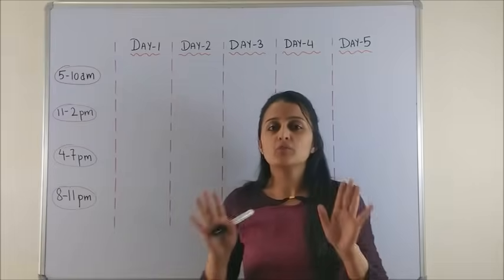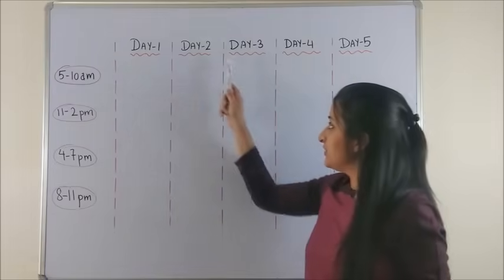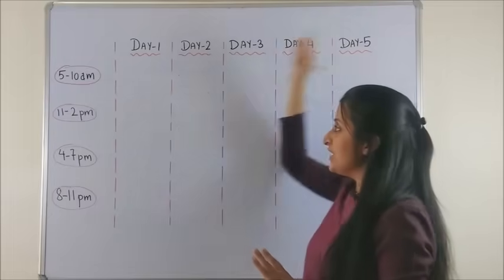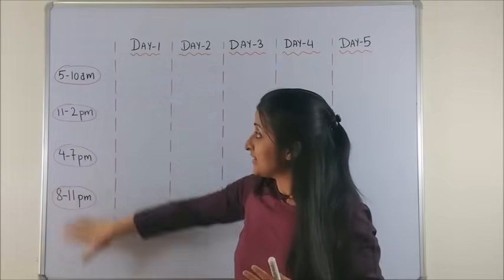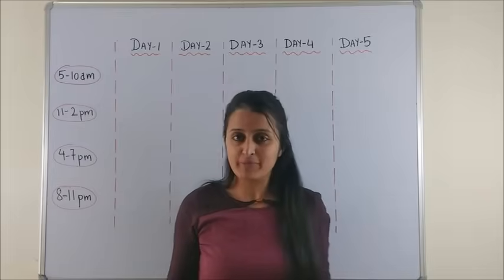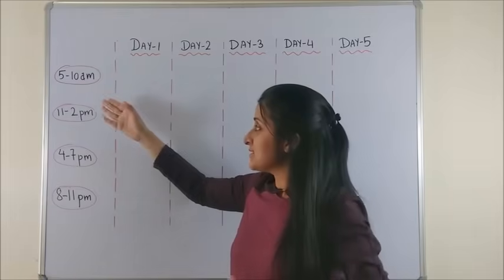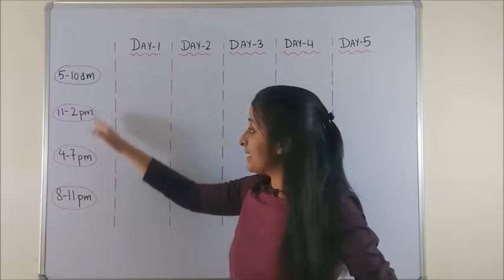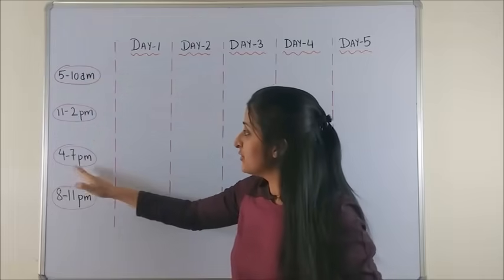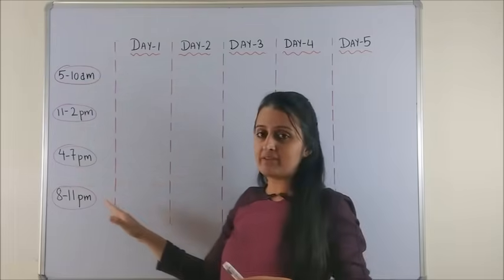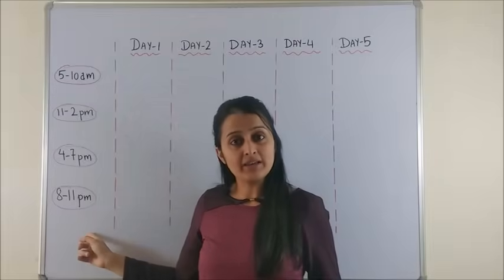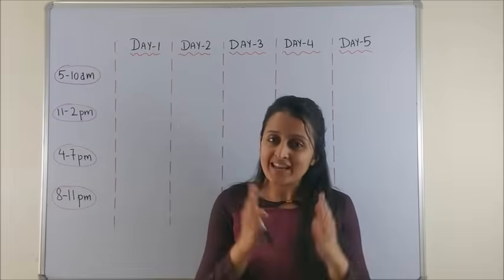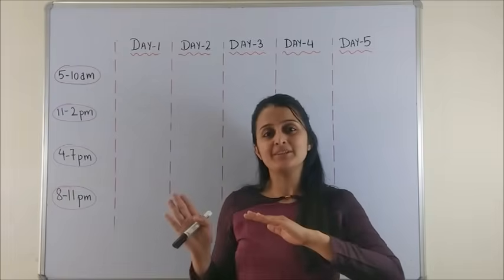What I have done is divided this into a sort of a grid where I have Day 1 to Day 5, and here I'm writing the timings I'll be following to prepare for my paper. For instance, I have chosen 5 to 10 a.m., likewise 11 to 2, 4 to 7 p.m., 8 to 11 p.m., and after 11 p.m. — nothing, just relax and sleep. So let me take you through this table day by day.